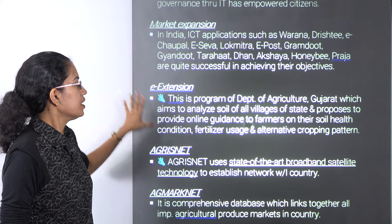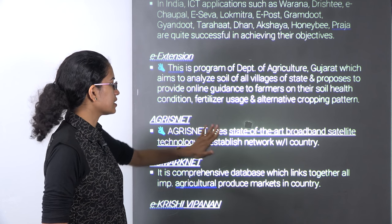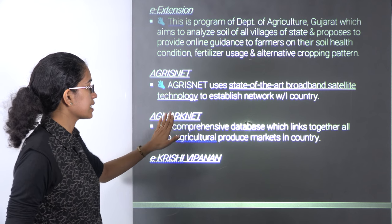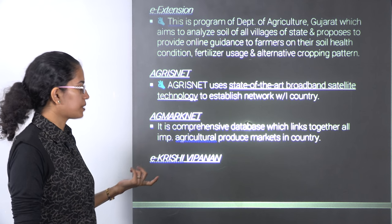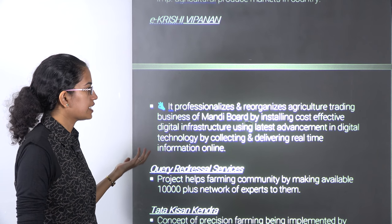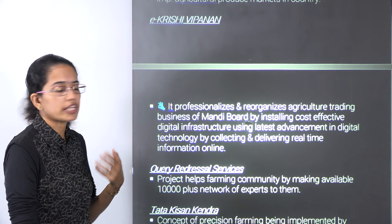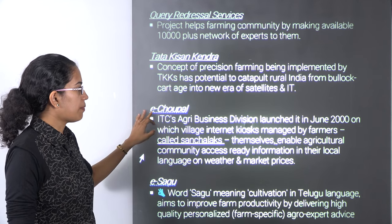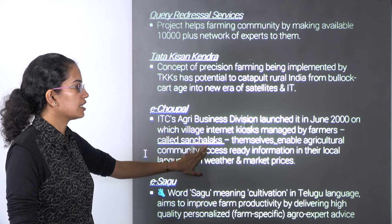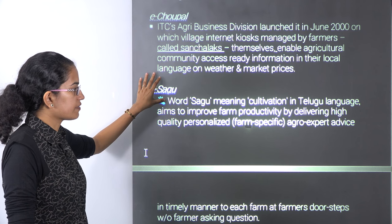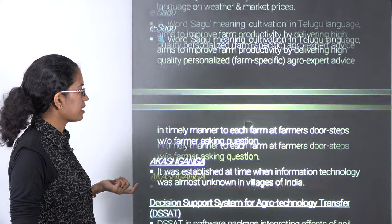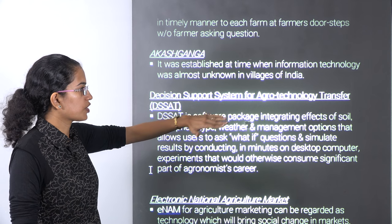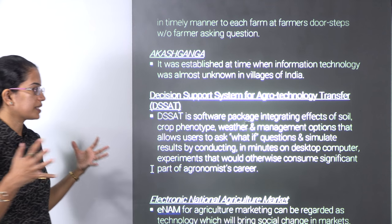AgriSnet is a state-of-the-art broadband satellite network technology across the country mainly for agriculture. eMarkNet talks about agricultural produce markets and a comprehensive database for that. eKrishiVipanan talks about professionalizing the mandis and the trading community with cost-free digital infrastructure. Tata Kisan Kendra talks about precision farming. eChopal workers are known as Sanchalaks, who enable the agricultural community. eSagu — where 'Sagu' means cultivation in Telugu — aims at improving crop productivity with personalized feedback. Akash Ganga talks about IT mainly in villages. DISSAT — Decision Support System for Agrotechnology Transfer — is a software package that enables weather management and crop management under one head.